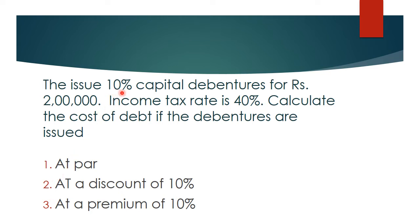See, 10% capital debenture means the interest rate is 10%. The total debt value is 2 lakh rupees. The income tax rate is 40% and we have to calculate three costs. If it is issued at par and redeemed at par, if it is issued at a discount of 10%, and if it is issued at a premium of 10%. So, in these three cases, we have to find out what exactly the cost of debt would be. Let us go through it one by one.